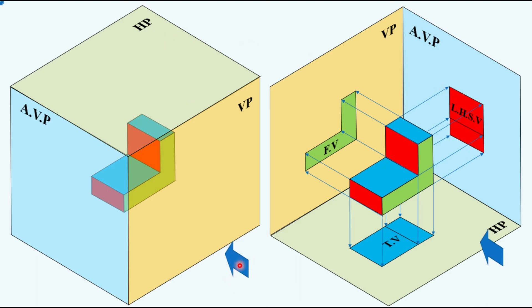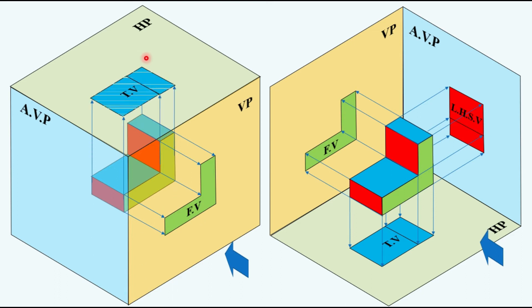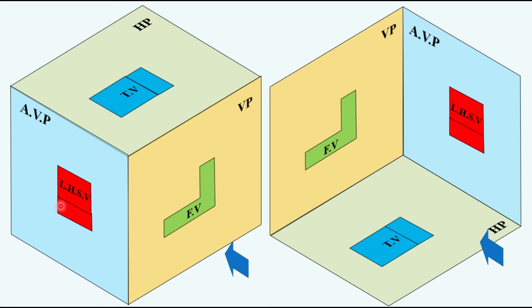If you are looking from this side, projections will be obtained on this vertical plane and we will get the front view. When looking from the top, this will be the top view obtained, and this will be the left-hand side view obtained on the auxiliary vertical plane. If I remove the object, these are the views obtained for the same object kept in the first quadrant and third quadrant — that is, first angle projection method is used in one and third angle projection method is used in the other.